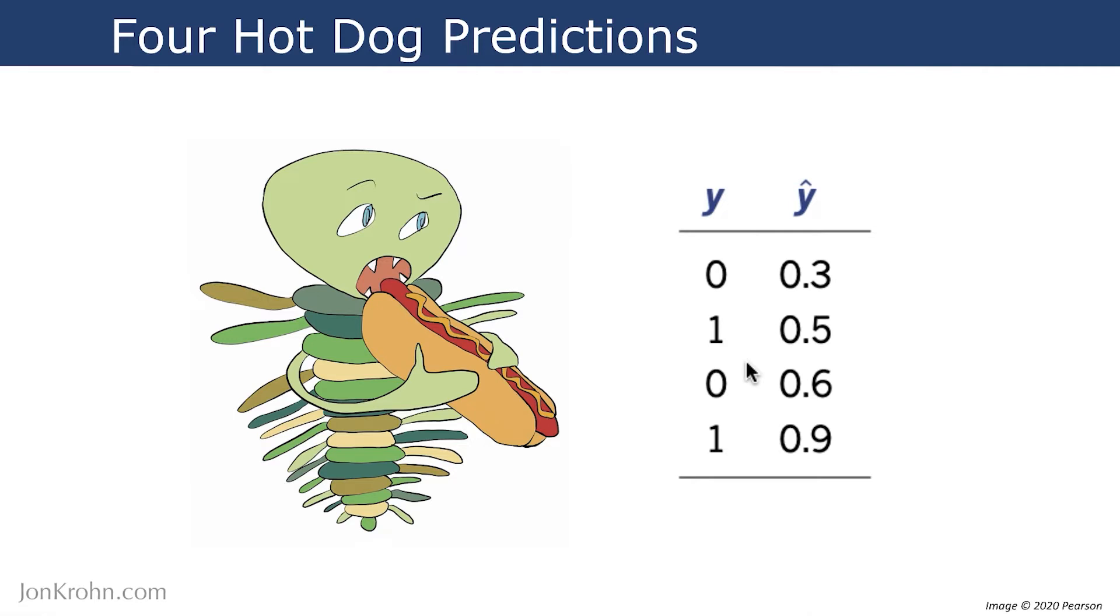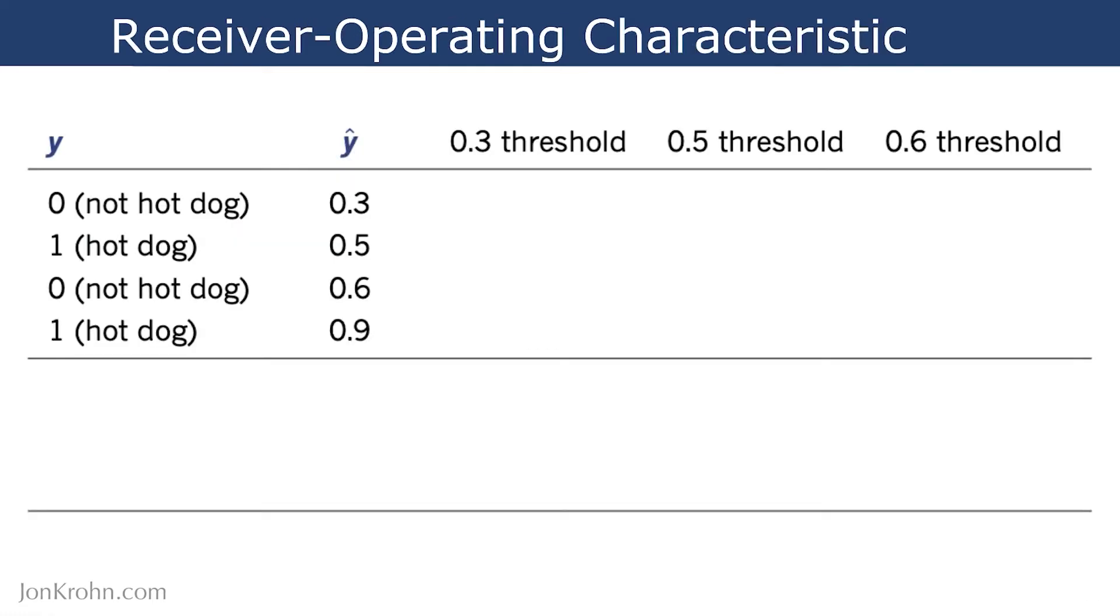Our algorithm, when presented with those images, provides us with four predicted outputs, and here they are. So in this situation here, it has the least confidence that there is a hot dog in the image. In this situation here, it has the most confidence.